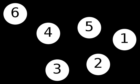A mixed graph is a graph in which some edges may be directed and some may be undirected. It is written as an ordered triple G equals (V, E, A) with V, E, and A defined as above. Directed and undirected graphs are special cases.